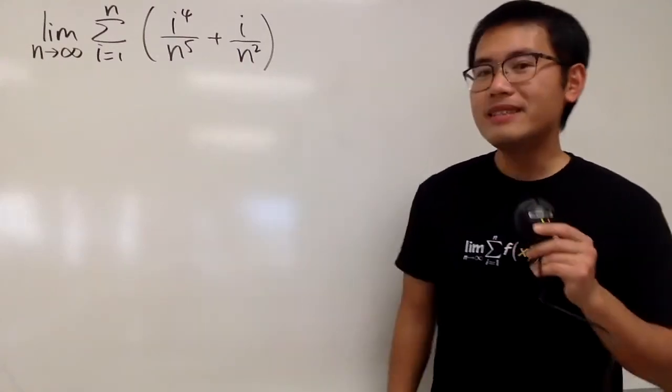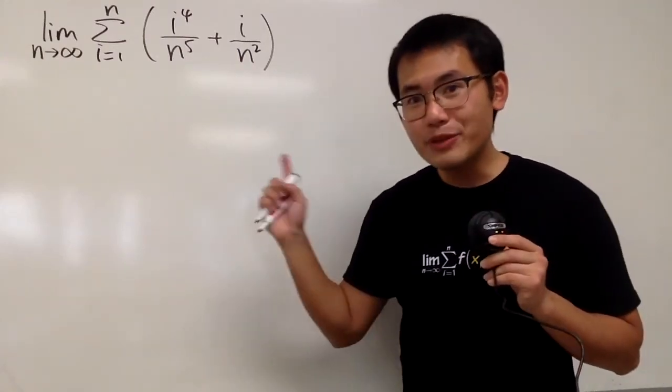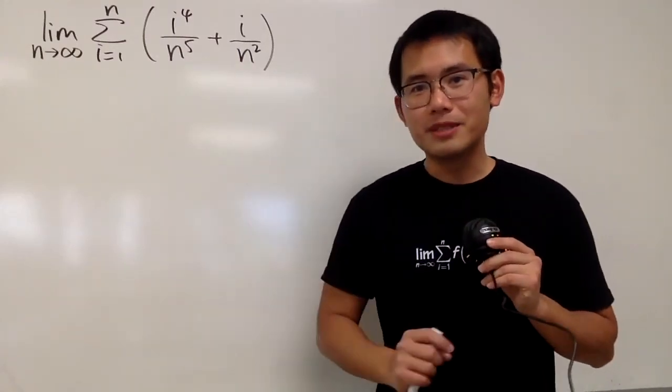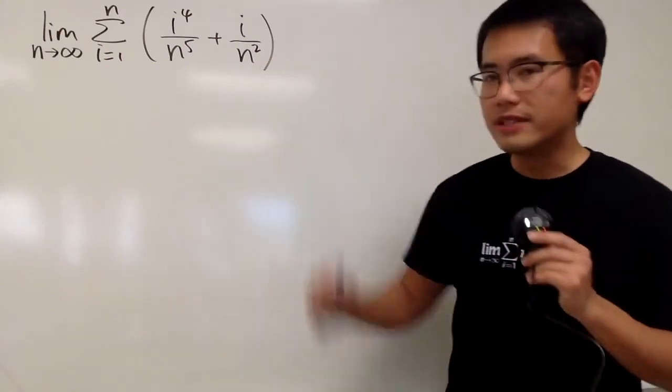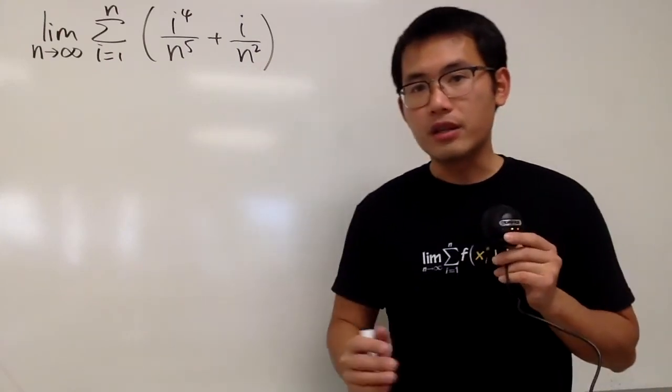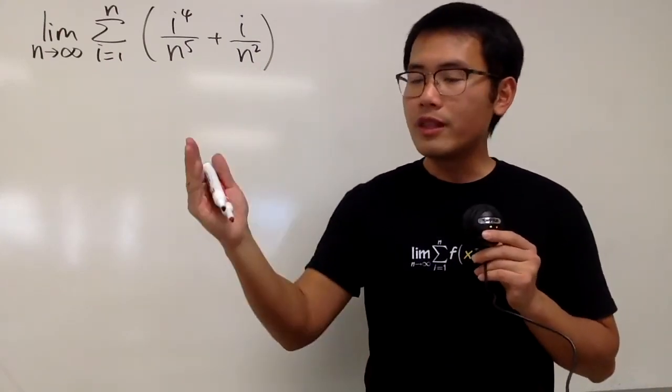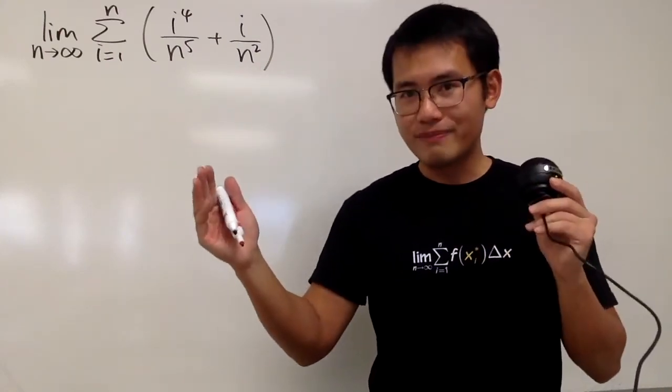We are going to compute this limit, and notice that this right here is a Riemann sum situation. This represents the area under the curve from one number to the other.